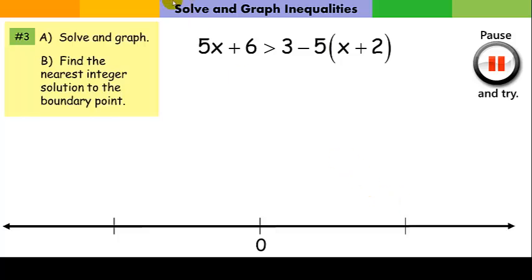Right, number three. Again, it says solve and graph, but now it asks for something else also. Find the nearest integer solution to the boundary point. Often, the boundary point just lets us know that boundary between true and false, and we want to know the nearest solution, the nearest integer solution to that boundary. So, let's go ahead and solve this.